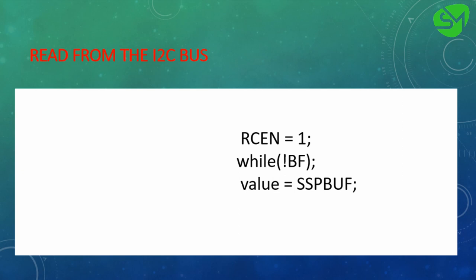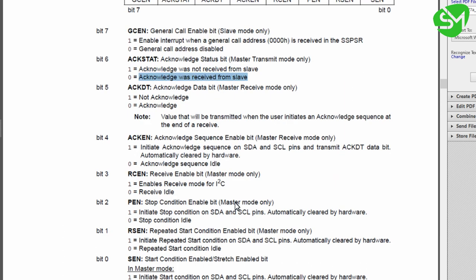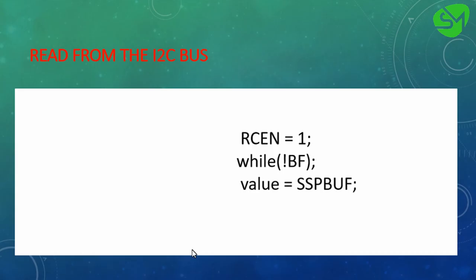For reading data from the I2C bus we implement only three lines. We enable the RCEN bit from the SSPCON2 register — RCEN is the receive enable bit for the master. We wait for the BF bit from the SSPSTAT register to go high, which means the data buffer of the I2C bus is filled with data. After that we load the data into a variable called 'value'. SSPBUF is the buffer register for holding the I2C data, so we load the contents of SSPBUF into the variable 'value'. That covers the programming sequences for implementing I2C on our PIC16F877A.